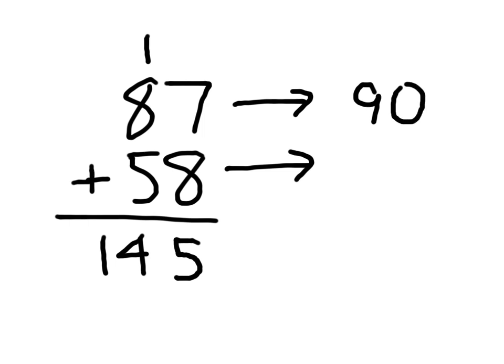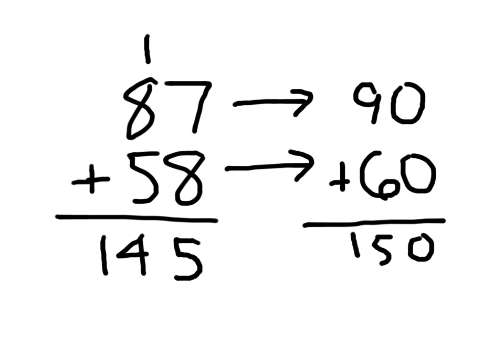So what we're going to do is estimate each of these addends to the nearest tens place. 87 to the nearest tens place is 90. 58 to the nearest tens place is 60. And if we add those together, 90 and 60, 9 and 6 is 15, our estimate for that addition problem is 150.